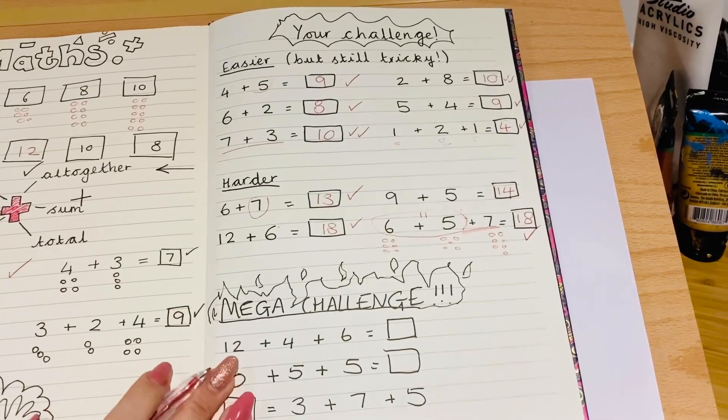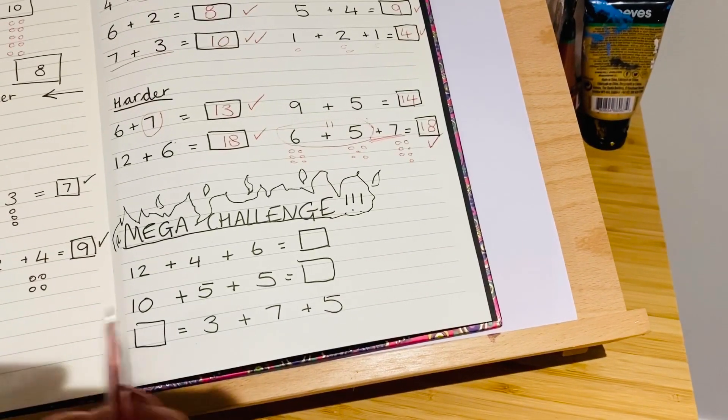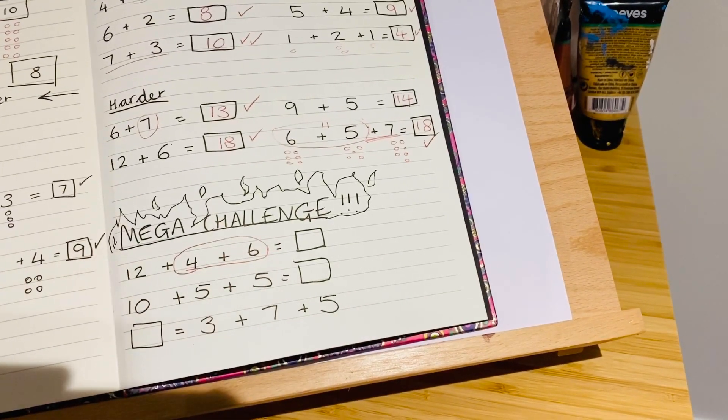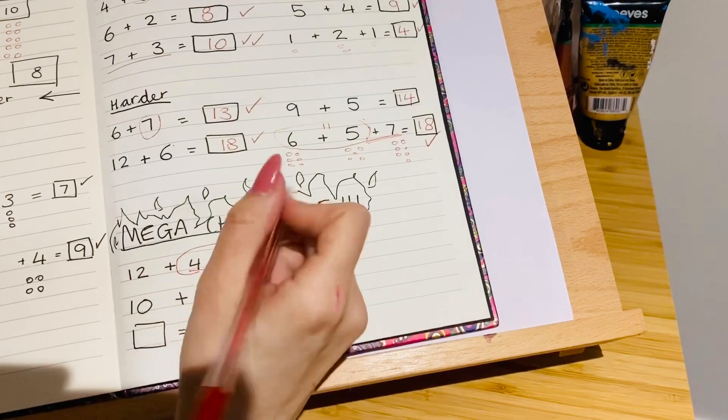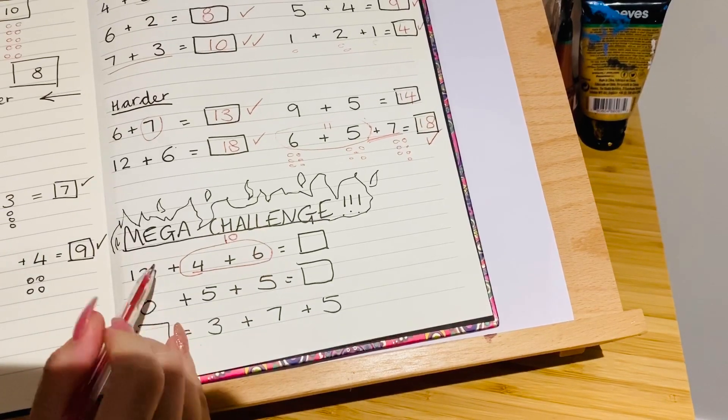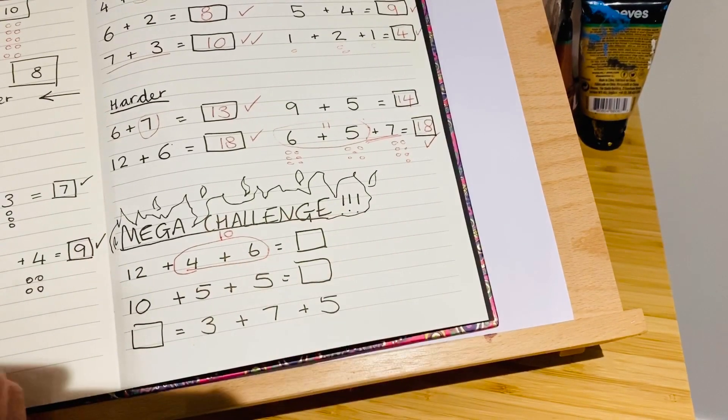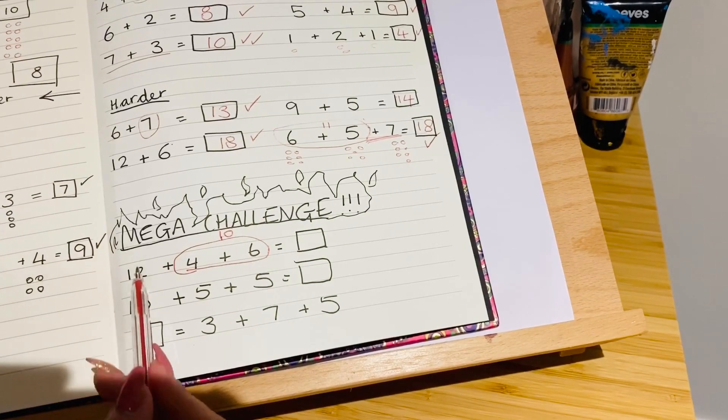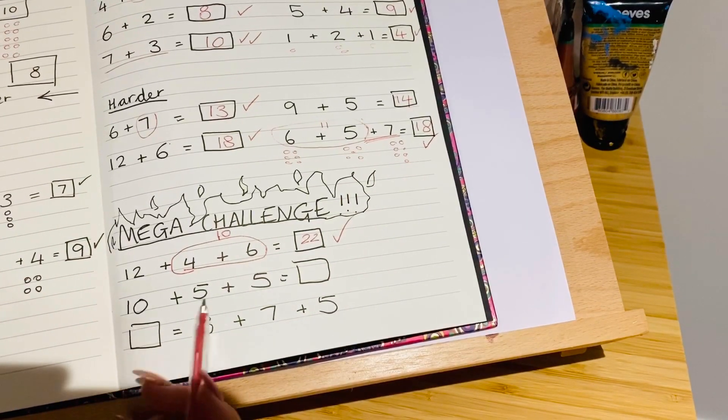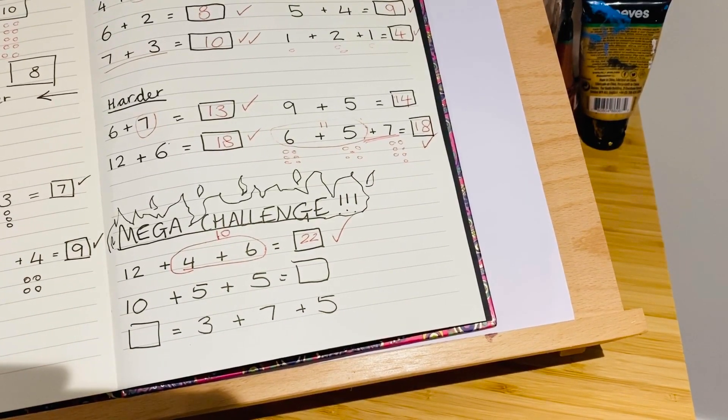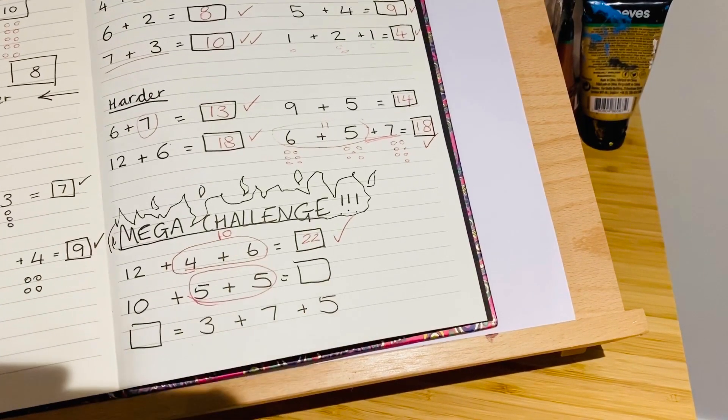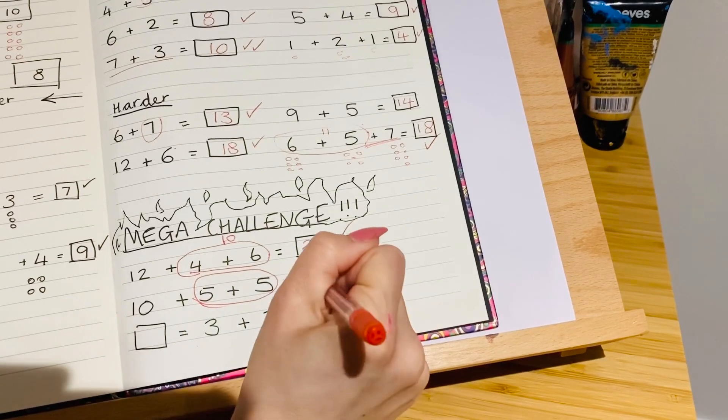Okay, if you decided to go for the mega challenge, I'm going to go through that one now. So twelve plus four plus six, you might have noticed there's actually a number bond to ten in there. So you could start by putting them together and then you know you're just doing twelve add ten, which is maybe a bit easier. So you could draw them out or you could count on in your head, which is a bit trickier. Or use a number line if you have one handy. Twelve plus ten is twenty-two. Give yourself a tick. Ten plus five plus five. Again, can you spot the number bond there? If you can, circle it on your paper. Okay, if you saw it, five plus five, that makes ten as well. So you've got ten add ten there, which you guys know is twenty.